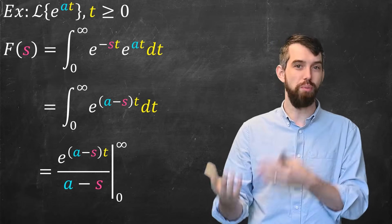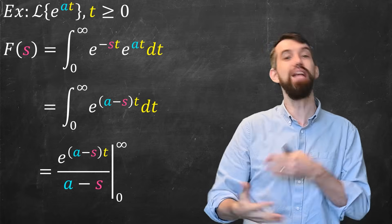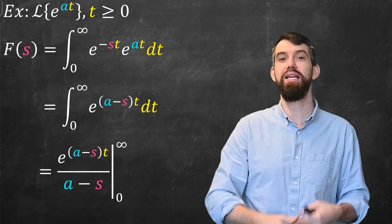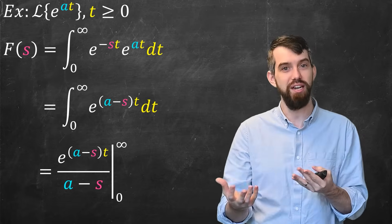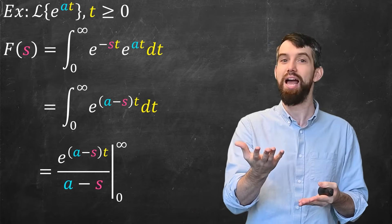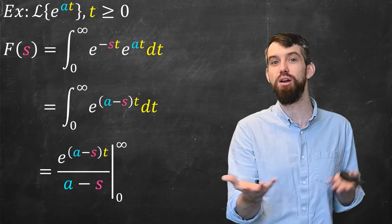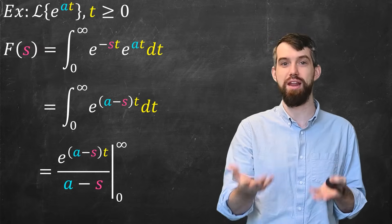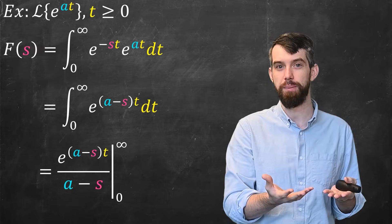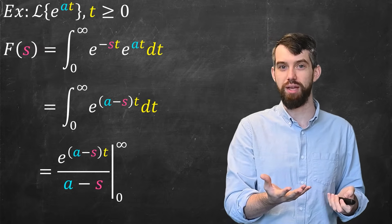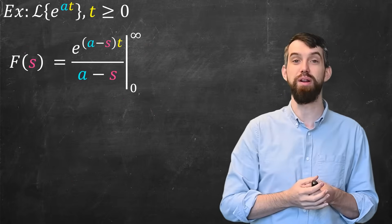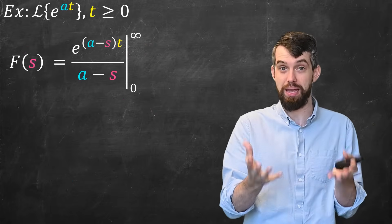Because we're doing improper integrals, the technical way to define these is to replace the infinity sign with, say, a b, and then take the limit as b goes to infinity. Nevertheless, we have this shorthand of just evaluating at 0 and infinity. Putting this together and getting rid of the mess — this is my claim. How do I evaluate that?